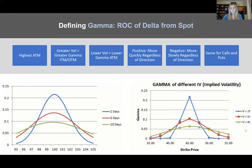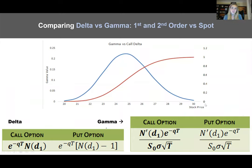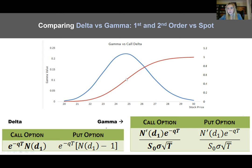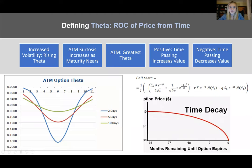Moving on, let's compare delta versus gamma — the first and second order versus spot. Looking at the graph, you see delta on the right axis as the red line. The blue line peaks in the middle — the peak of the blue line is equivalent to the 50% mark for delta. For a put delta, it would look the same but be the inverse going downward. The peak of gamma is right at the money. As we move into thetas and vegas, increasing volatility means rising theta, and at-the-money kurtosis increases as maturity nears because when you are at the money, you'll have the greatest theta, and that's exacerbated as you get closer to maturity.